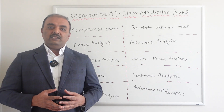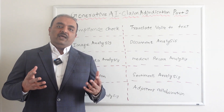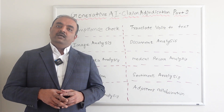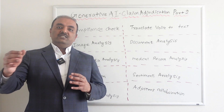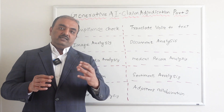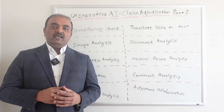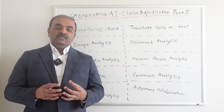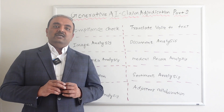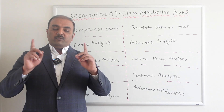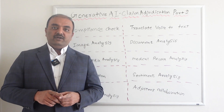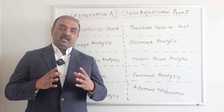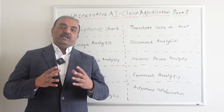Adjusters collaboration is the final use case. For large commercial lines claims — like workers' compensation or commercial auto — three to four adjusters may be looking at the same claim. Instead of manually interacting, AI can collect data from all these adjusters into a central repository where everyone can access it, making sure they are processing the claim with up-to-date data.